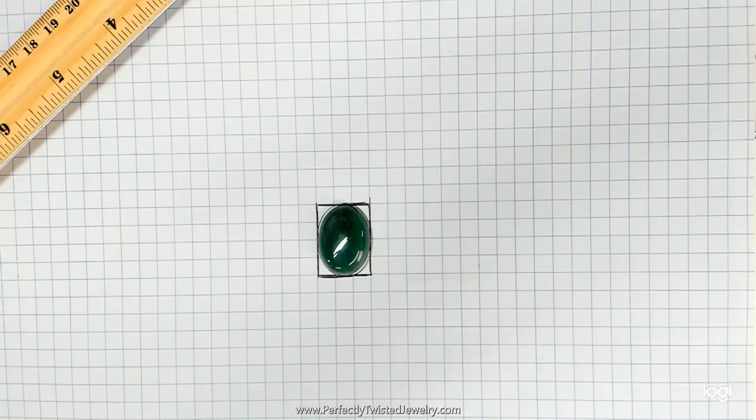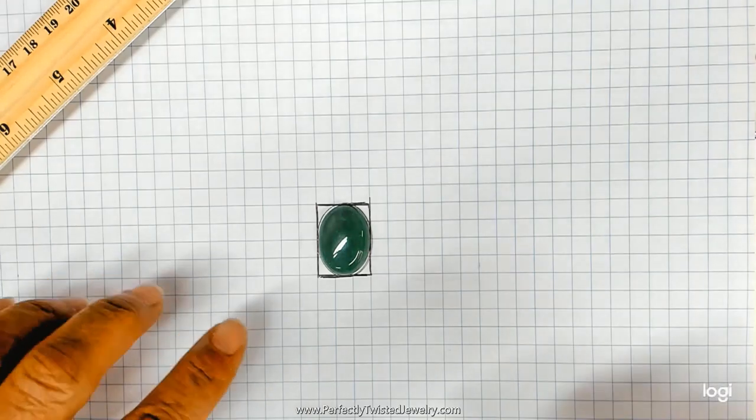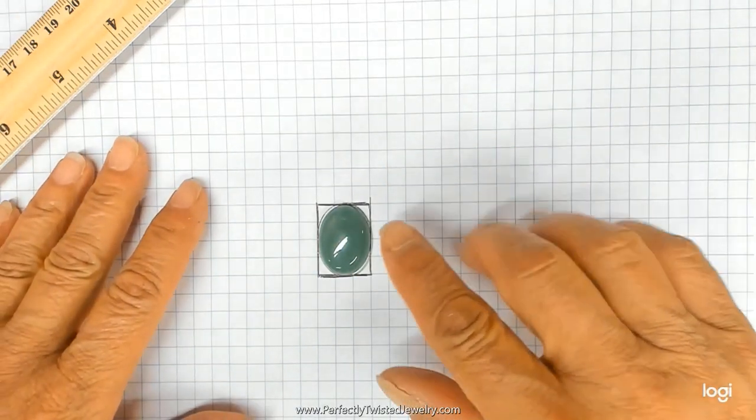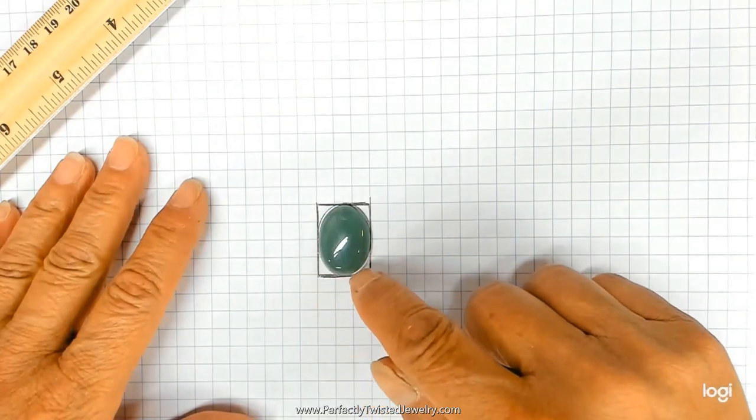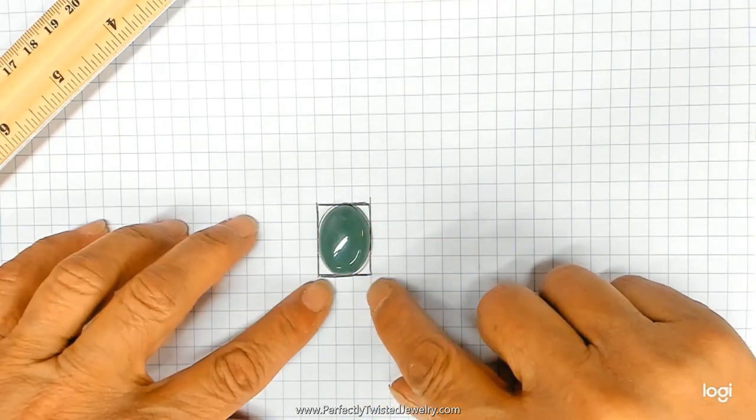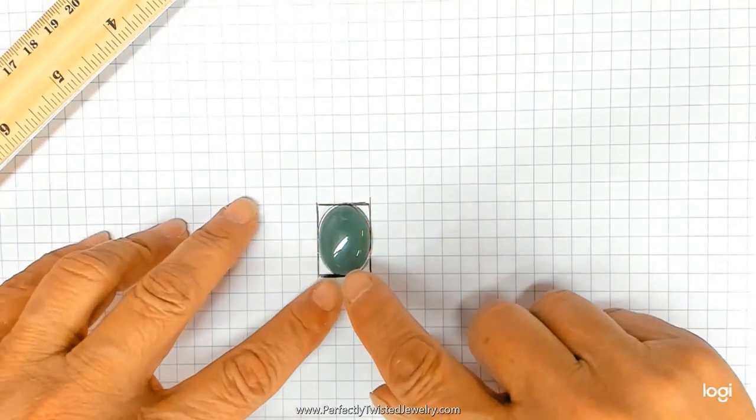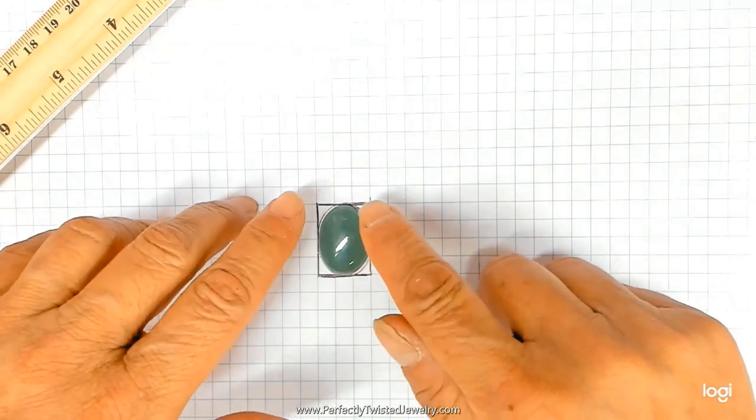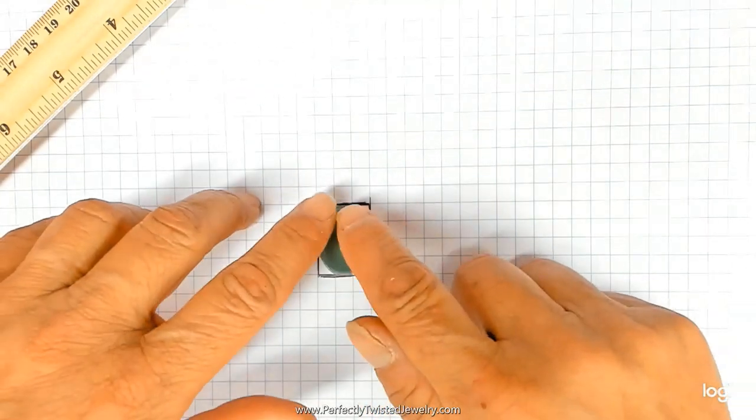So the first thing I do is I align my cabochon to what I call a logical plane on the grid paper, meaning I don't just put it anywhere on the grid paper. I align it so that its perimeter is logically enclosed within either a square or a rectangle, a perimeter that fits the stone, this rectangle box for example.